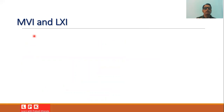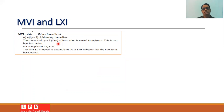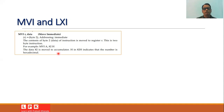Another commonly used data transfer instruction is MVI — move immediate. Its format is MVI R, data, where the data in byte 2 of the instruction is moved to register R. This is called immediate addressing since the data itself is mentioned in the instruction. This requires two bytes. For example, MVI A, A2H moves the hexadecimal data A2 into the accumulator.